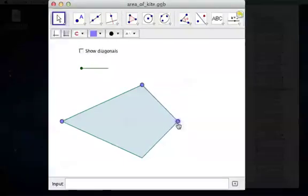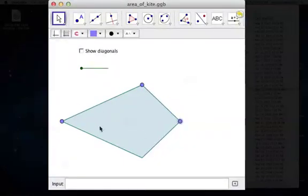A kite is a figure that has two pairs of congruent sides. Now that happens to be the same definition of a parallelogram.